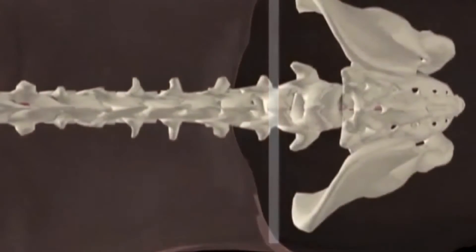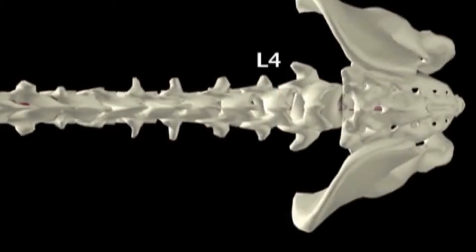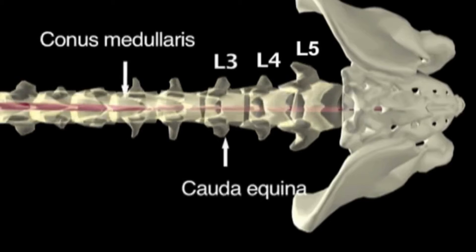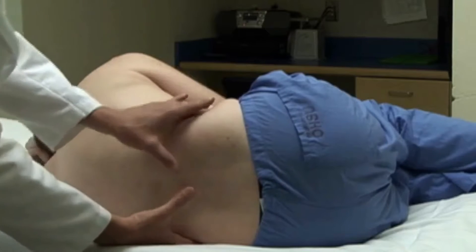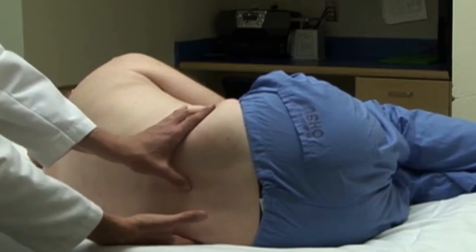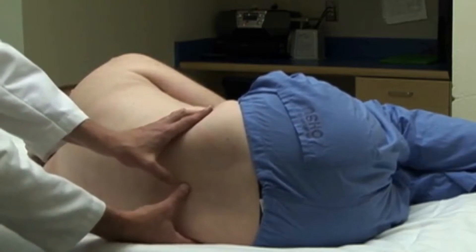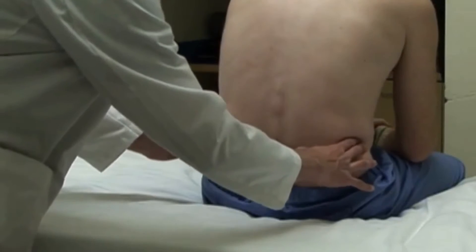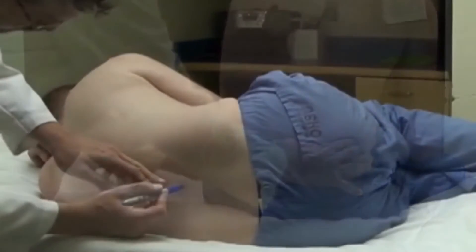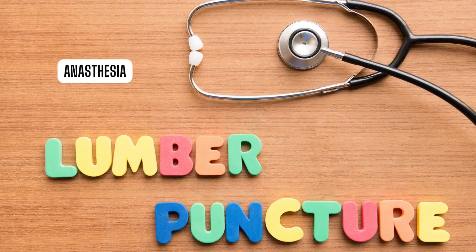Ideally, the lumbar spine should be perpendicular to the table if the patient is in the sitting position, and parallel to the table if in the lateral recumbent position. These positions help keep the needle at the midline. A line is visually drawn between the superior aspects of the iliac crest and intersects the midline at the L4 spinous process. Insert the needle in the interspace between L3 and L4, or L4 and L5, since this location is below the termination of the spinal cord. Palpate the landmarks before preparing the skin and before administering local anesthesia, since anesthesia may make landmarks harder to identify. Use a skin marking pen to identify the site of needle insertion.